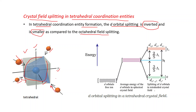We already discussed the shape of d-orbitals. In d-orbitals, dxy, dyz, and dxz, the lobes are oriented in between the axes, so these orbitals feel more repulsion from the negative charge of ligands. While in the case of dx²-y² and dz², lobes are oriented along the axes, so these orbitals feel less repulsion and their energy is decreased.